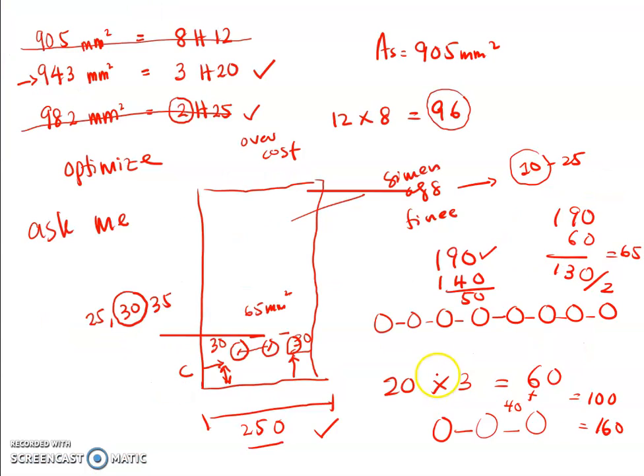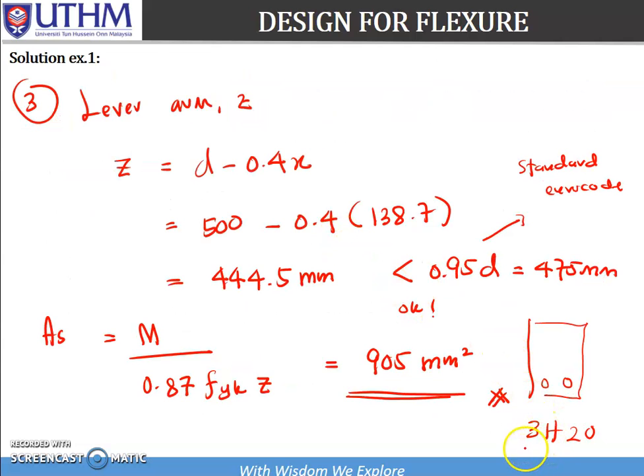After we calculate, then we decide with the selection of the steel bar diameter and the steel bar numbers. Finally, we have the answer and also the proposed steel bar diameter and also numbers. Please make your revision and also do some examples. Thank you, assalamualaikum and salam sejahtera.